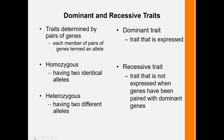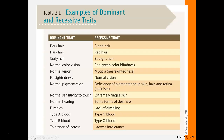Someone with blue eyes has to have both recessive traits in order to express that specific trait. So we have dominant traits and some recessive traits. You can pause or come back to this to see the examples of some of the characteristics.